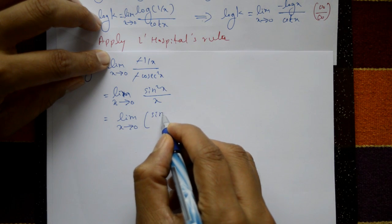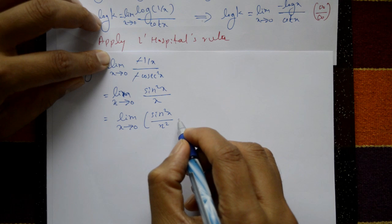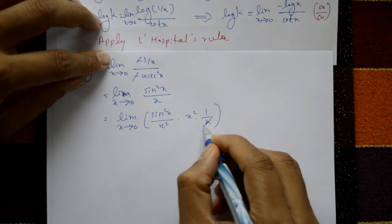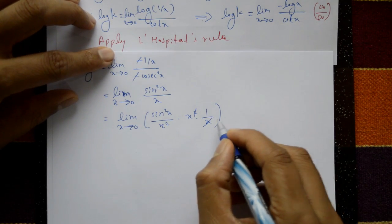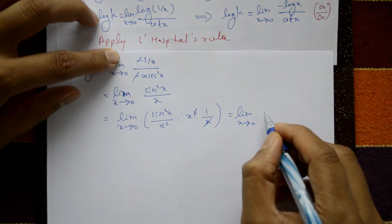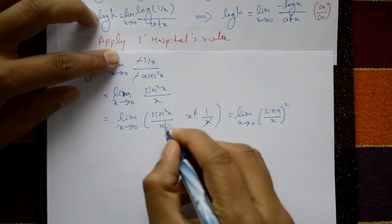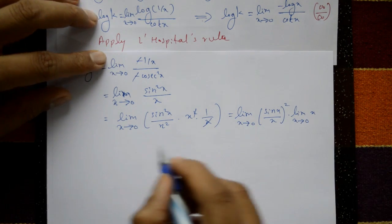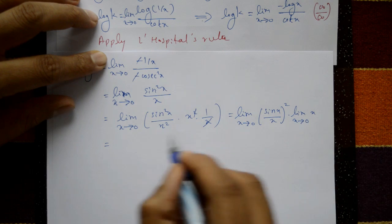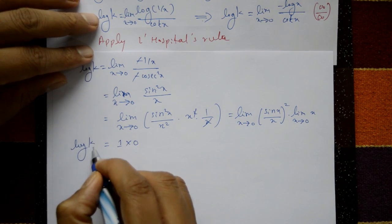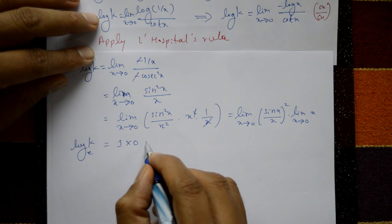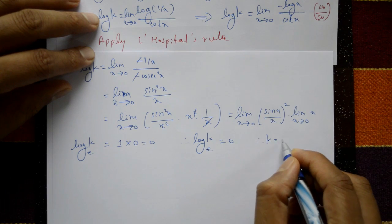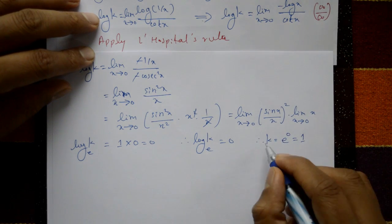Dividing by x squared and multiplying by x squared, the expression becomes the limit of sin x by x whole squared, into x, as x tends to 0. Applying the limit: sin x by x whole squared equals 1, and x equals 0, so the result is 1 times 0 equals 0. Therefore log k to the base e equals 0, so k equals e raised to 0, which is 1.